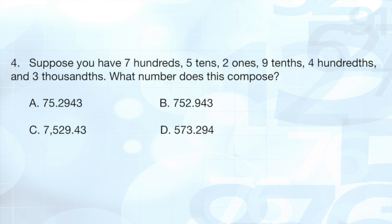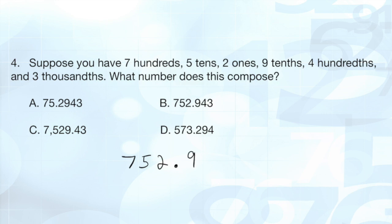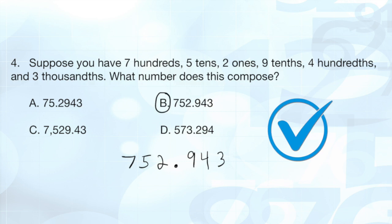Now you can see why back in problem one, I wanted to go through all those place values. So 7 100s, it might be helpful to write this all out. 7 100s, that's going to be in our 100s place. 5 10s is going to go in the 10s place. 2 1s is going to go in the 1s place. That implies that now I have my decimal. 9 10ths, 4 100ths, and 3 thousandths. They actually gave us everything in order from left to right. So our final answer here is going to be 752.943, which is option B.